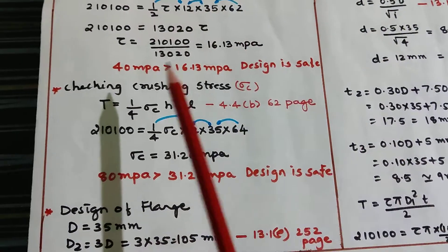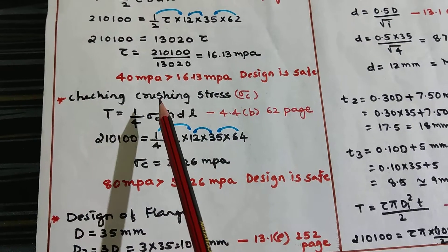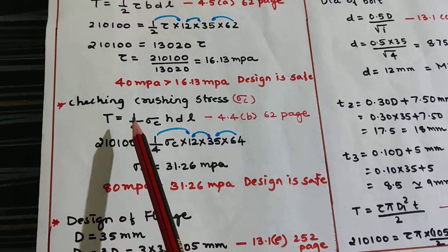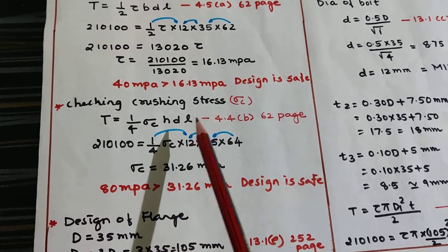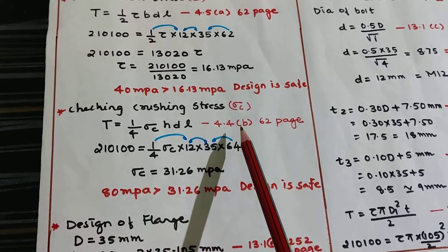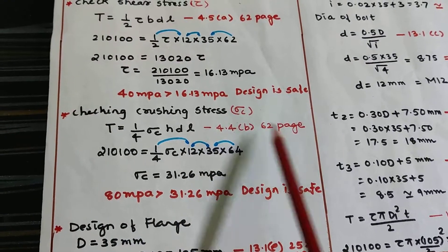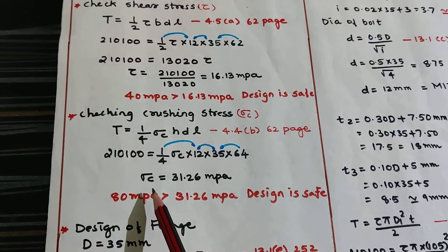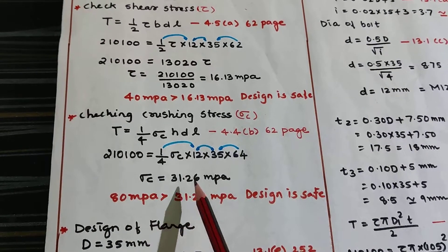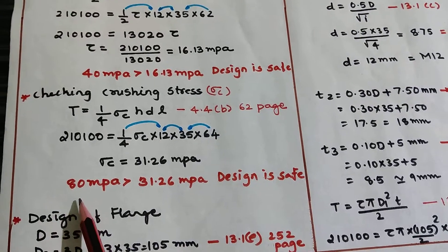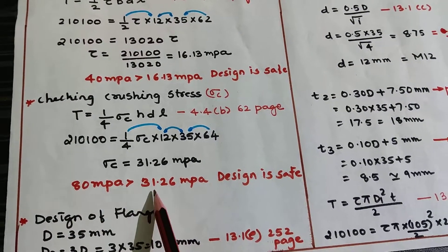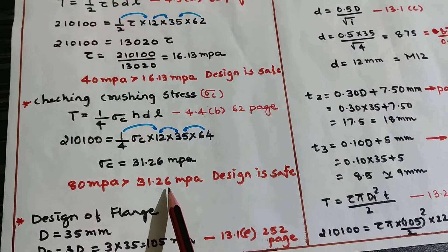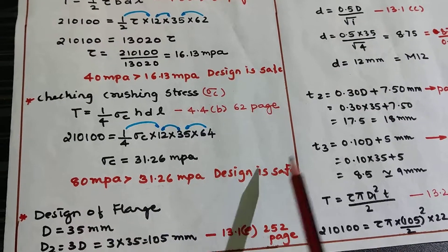Similarly, I will check crushing stress. T = 1/4 σc H D L which is on equation 4.4B page 62. Substitute the values and find crushing stress: 31.26 MPa. The given value is 80 MPa and what we have got is 31.26 MPa. So here also my design is safe.